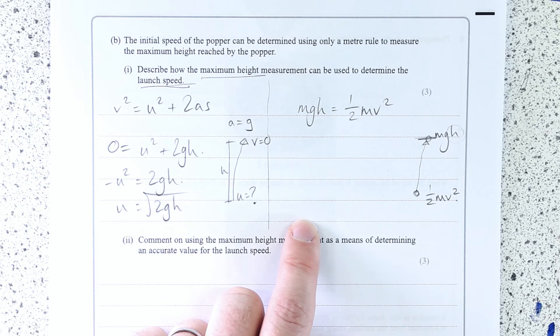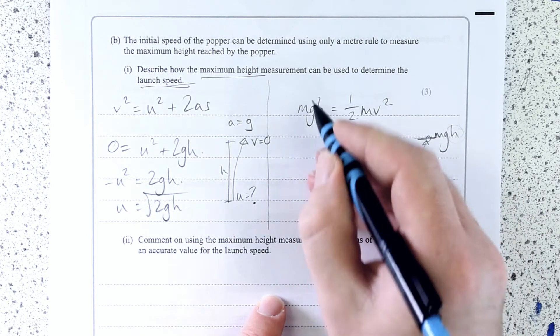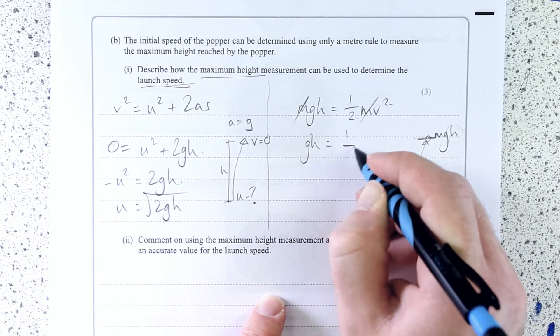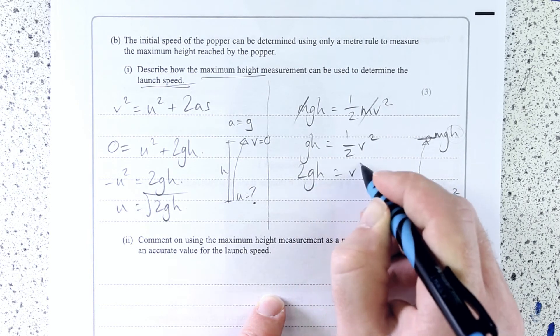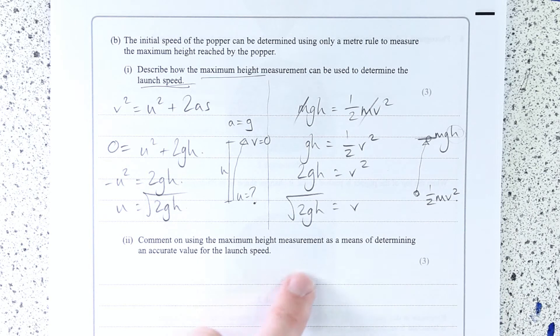Then, over here, you'll see exactly the same thing. M's cancel first of all. So GH equals half V squared, multiplied by 2, root 2GH equals V. Or, in this case, it's the initial velocity, but we'd accept either of those for the full marks.